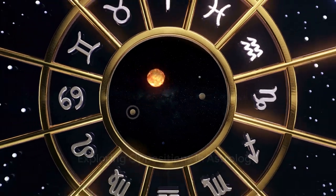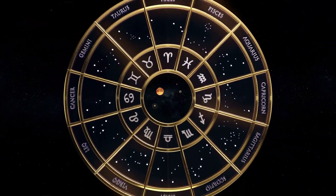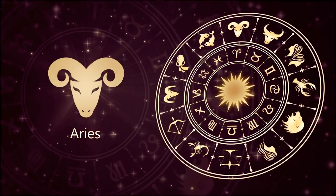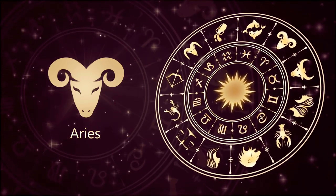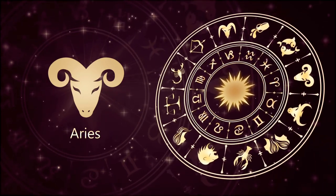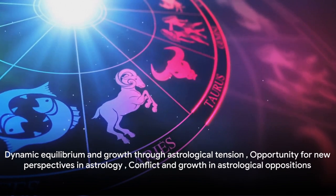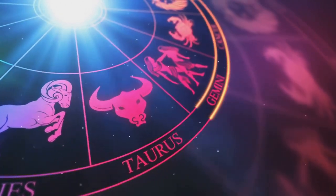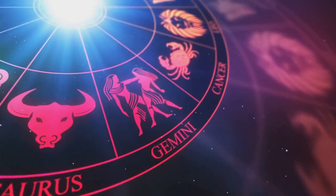Moving on, let's tackle oppositions. Picture two planets directly across from each other, 180 degrees apart. This is an opposition. Oppositions represent challenges and tension, but also balance and perspective. They occur between signs that are polar opposites on the zodiac wheel. While the tension can create conflict, it can also result in a dynamic equilibrium, a chance for growth, and an opportunity to view things from a different perspective.